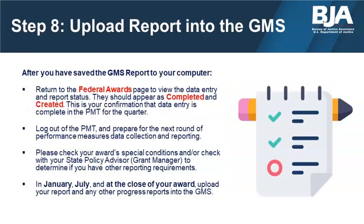After saving the GMS report to your computer, return to the Federal Awards page to view the data entry and report status. The data entry status should appear as completed and the report status should appear as created — this confirms that data entry is complete in the PMT for the quarter. Log out of the PMT and prepare for the next round of performance measures collection and reporting. Please check your award's special conditions and check with your state policy advisor or grant manager to determine if you have other reporting requirements. In January, July, and at the close of your award, upload your report and any other progress reports into GMS.